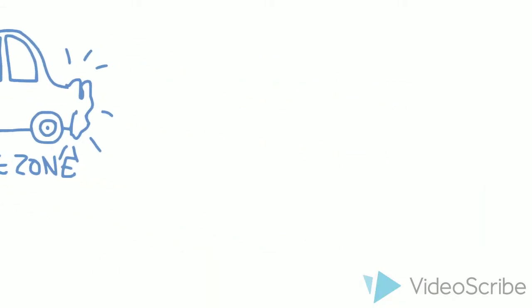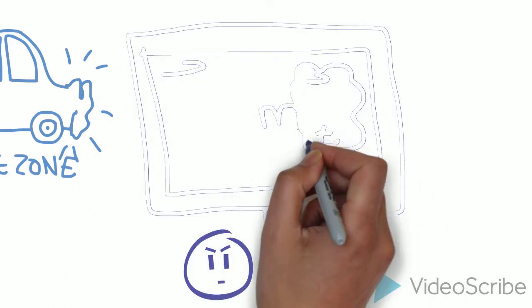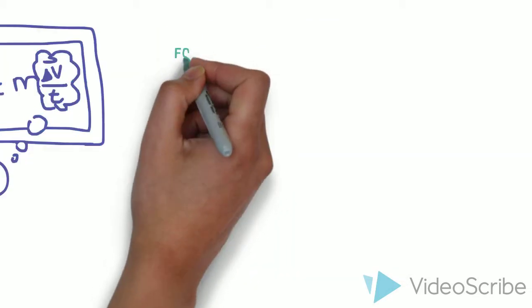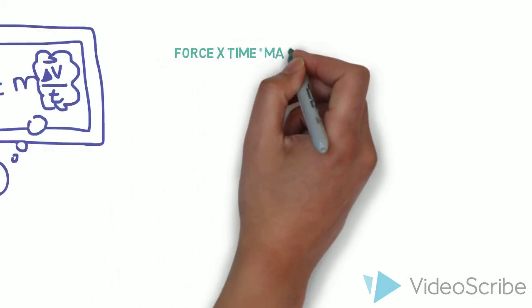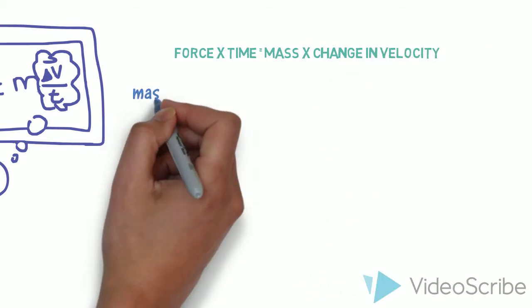The Physics Behind Crumple Zones. Let's start with Newton's second law of motion. The force is equal to the mass and acceleration. We also know that acceleration is equal to the change in velocity over time. This means that the force times time is equal to the mass and the change in velocity, or momentum.